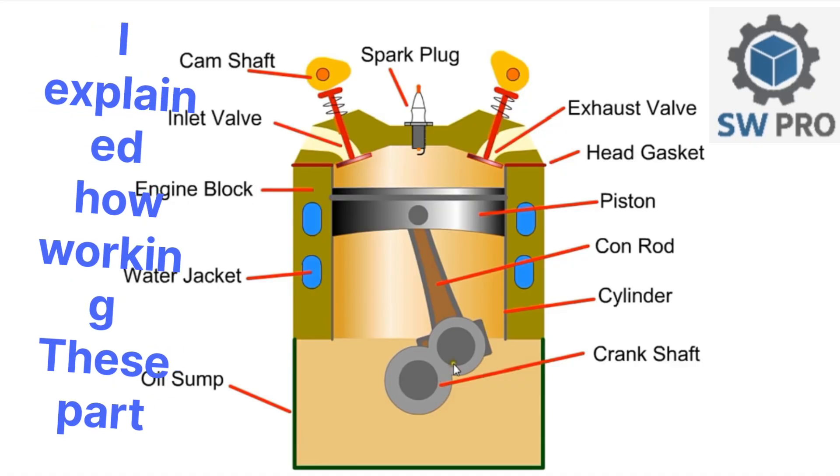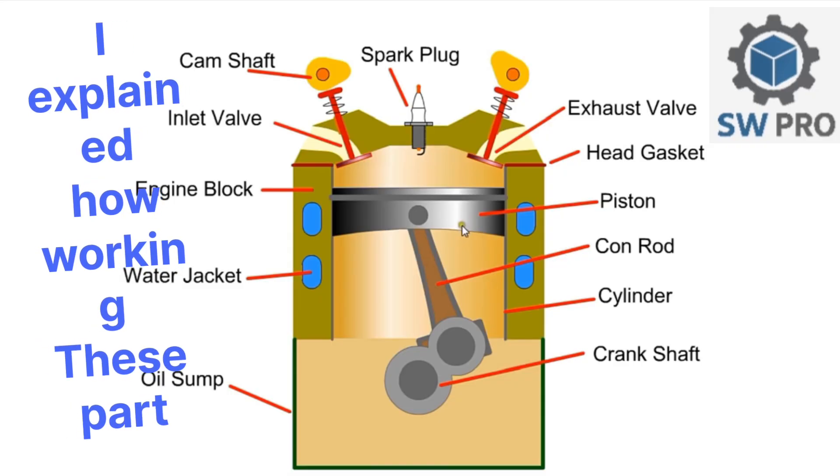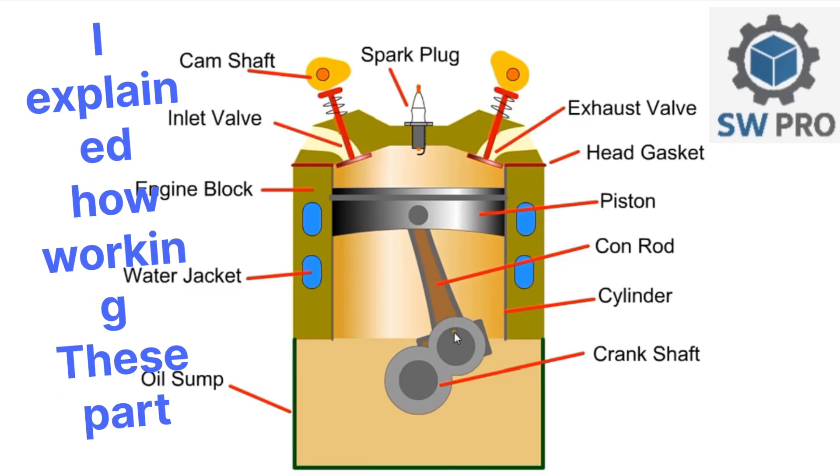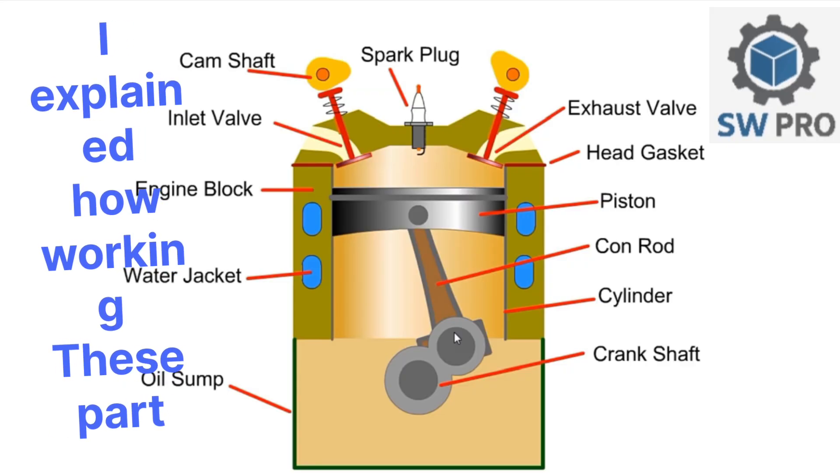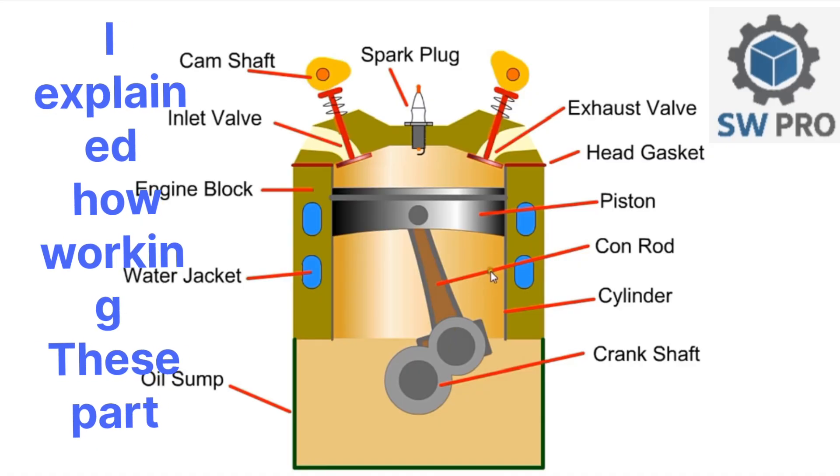The cylinder liner provides a smooth surface for the piston to move inside, while the con rod connects piston to the crankshaft, thus converting reciprocating motion of the piston to rotational movement of the crankshaft.